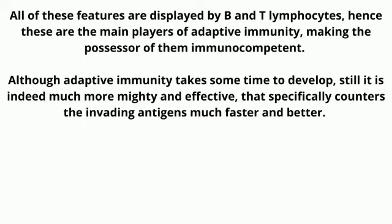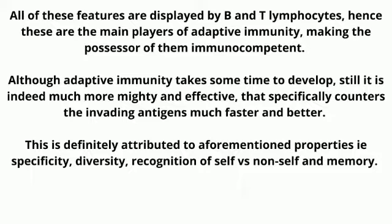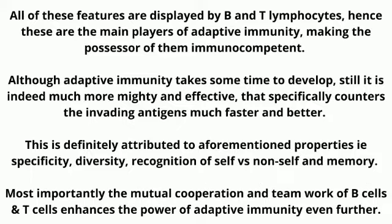All of these features are displayed by B and T lymphocytes, hence these are the main players of adaptive immunity, making the possessor of them immunocompetent. Although adaptive immunity takes some time to develop, it is much more mighty and effective, specifically encountering the invading antigens much faster and better. This is attributed to the properties of specificity, diversity, recognition of self versus non-self, and memory.